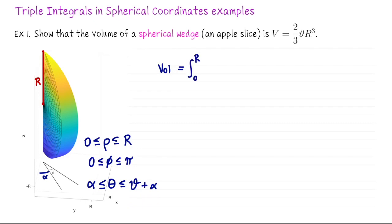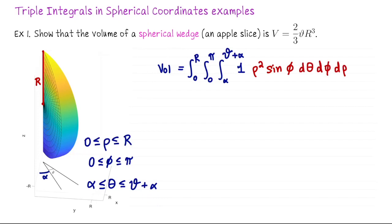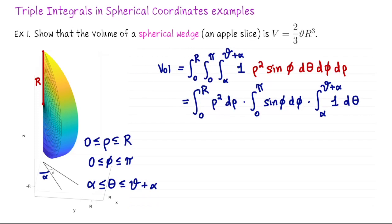We set up our volume calculation: integrate from zero to R for rho, zero to pi for phi, and alpha to the slice angle plus alpha for theta. When computing volume with a triple integral, we integrate the function 1. Switching to spherical coordinates, we pick up a factor of rho squared sine phi. With the ordering I've chosen, the differentials are d theta, d phi, d rho. The integrand factors into a function of rho times a function of phi times 1, and since all bounds are constants, we split this into the product of three single integrals: integral from zero to R of rho squared d rho, times the integral from zero to pi of sine phi d phi, times the integral from alpha to slice angle plus alpha of 1 d theta.